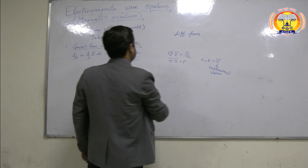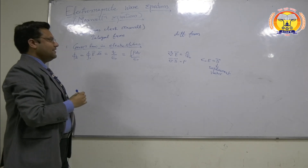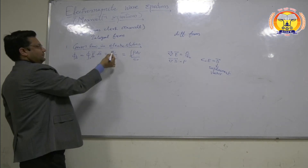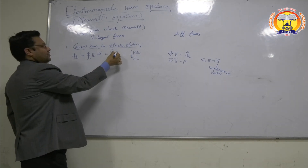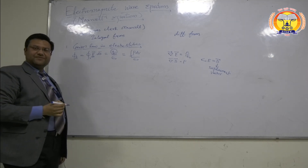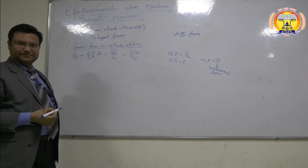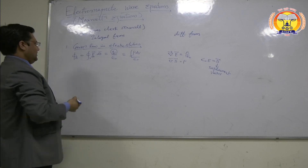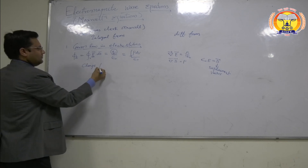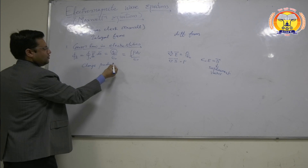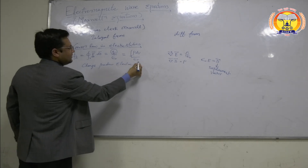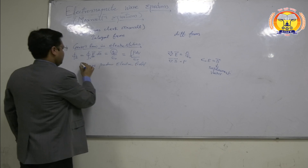This equation explains that the electric field is produced due to charge — that is, charge produces an electric field.